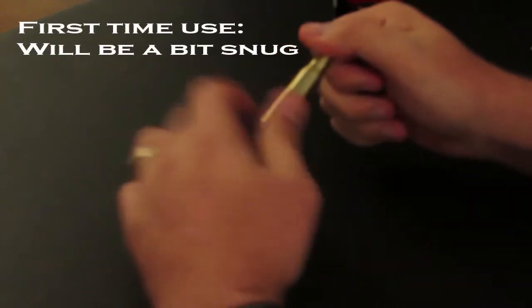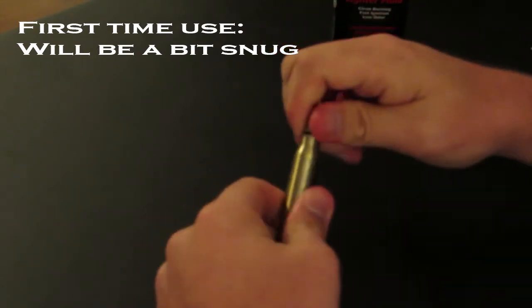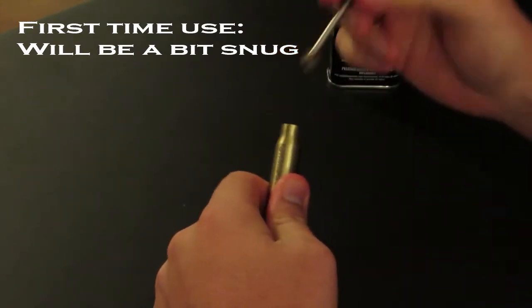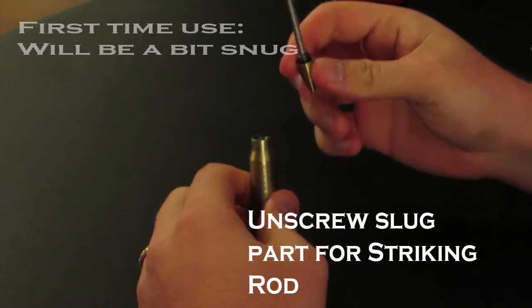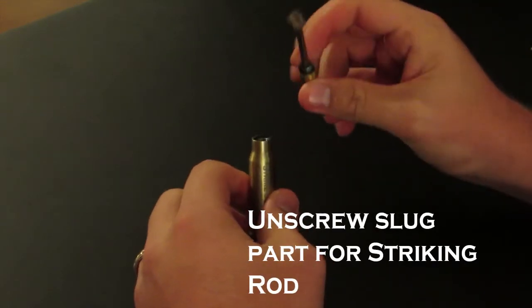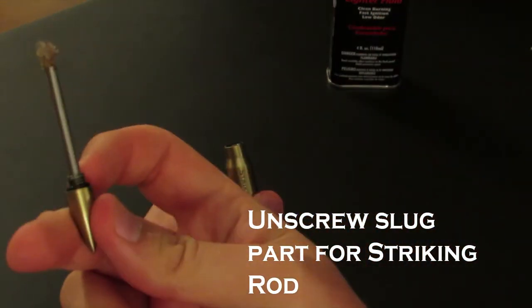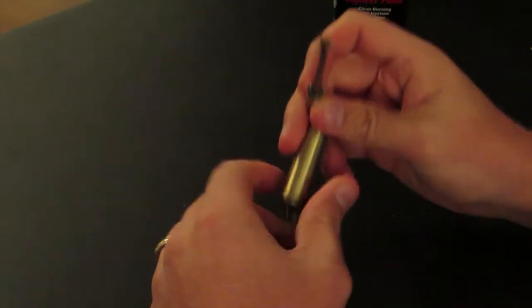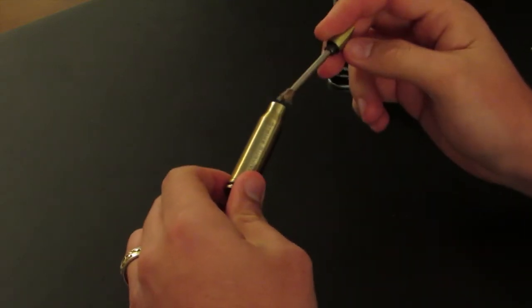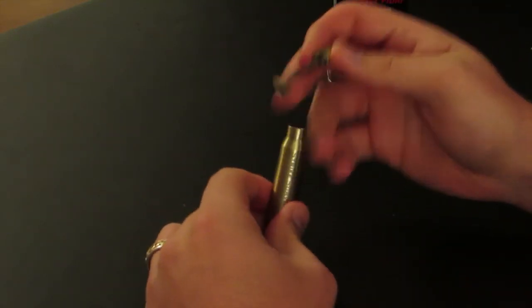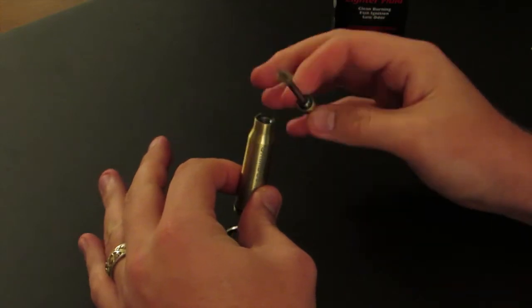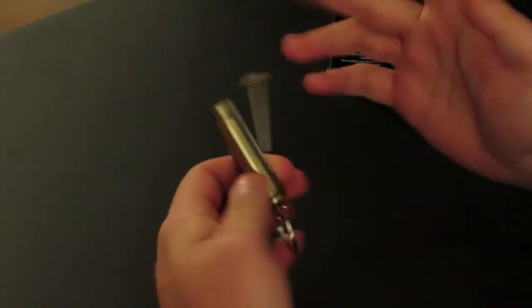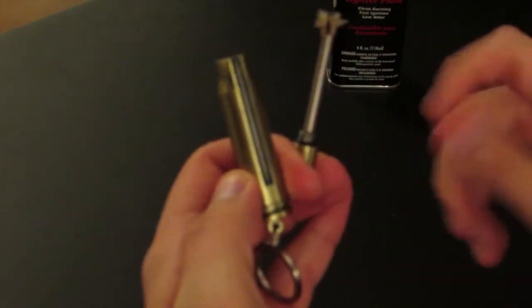So when you get it, you're going to take it out. The first time you unscrew this, it might be a little hard. You're going to take the top of the slug off and unscrew it. Sometimes these threads can stick, so the first couple times it's going to take some getting used to working it. But it works great once you break it in. I've already played with mine, that's why it's been used a little bit.